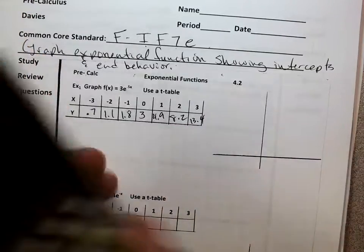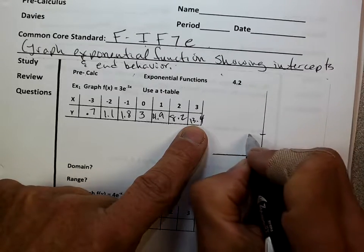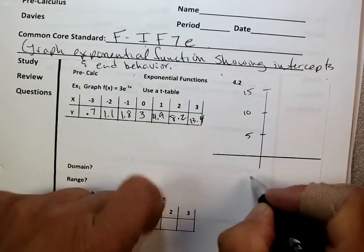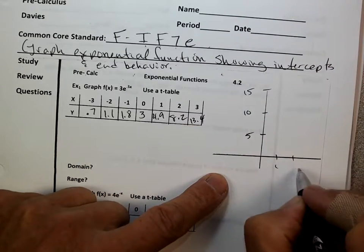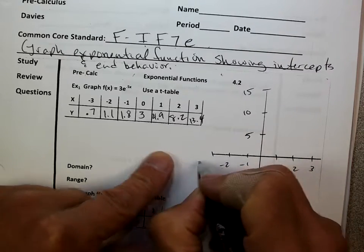Now if we're going to graph this, I know I've got to go up to 13.4, so I might go maybe 5, 10, 15. I'll go 1, 2, 3, and I'll go negative 1, negative 2, and negative 3.